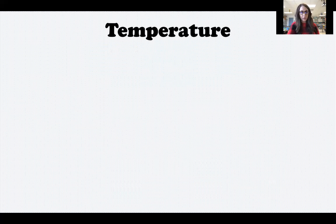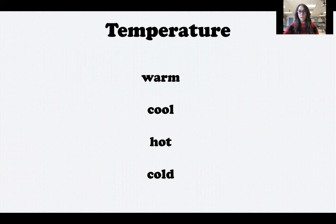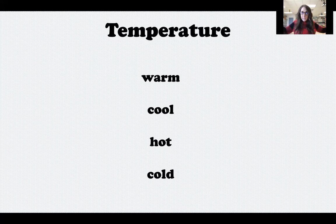Another part of the weather is temperature, which means how hot or cold the air outside is. When you listen to a weather report and they say it's 42 degrees, that's the outside air temperature. We can use a thermometer to measure it, or describe it with words like warm, cool, hot, and cold. Knowing the temperature is important because it tells you what to wear — this morning the weatherman said it was only 33 degrees, so I knew I needed a sweater.